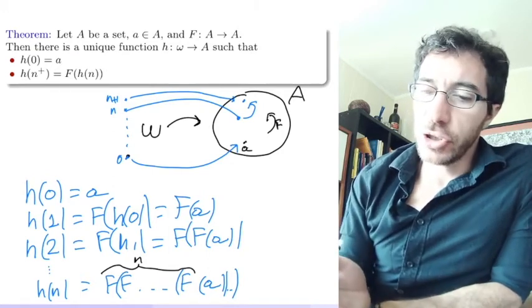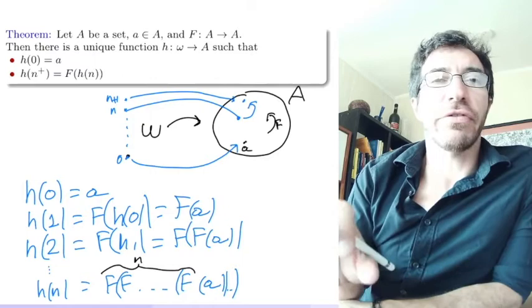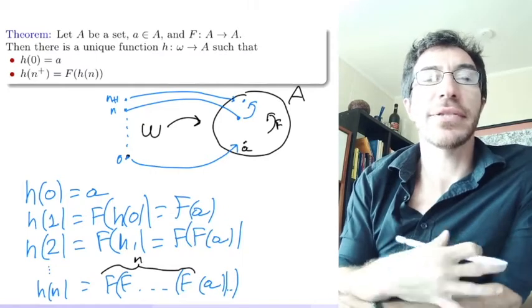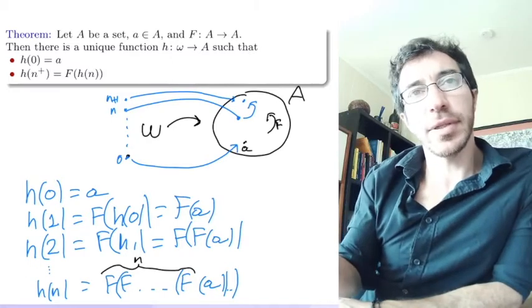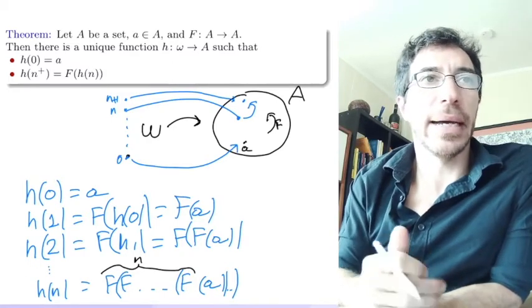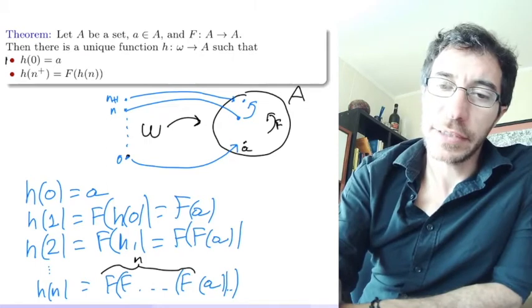So again, this is just for intuition of how we actually get it. The theorem says that there is a function that satisfies this property, and we know it has to be this function, but essentially that's what it satisfies.